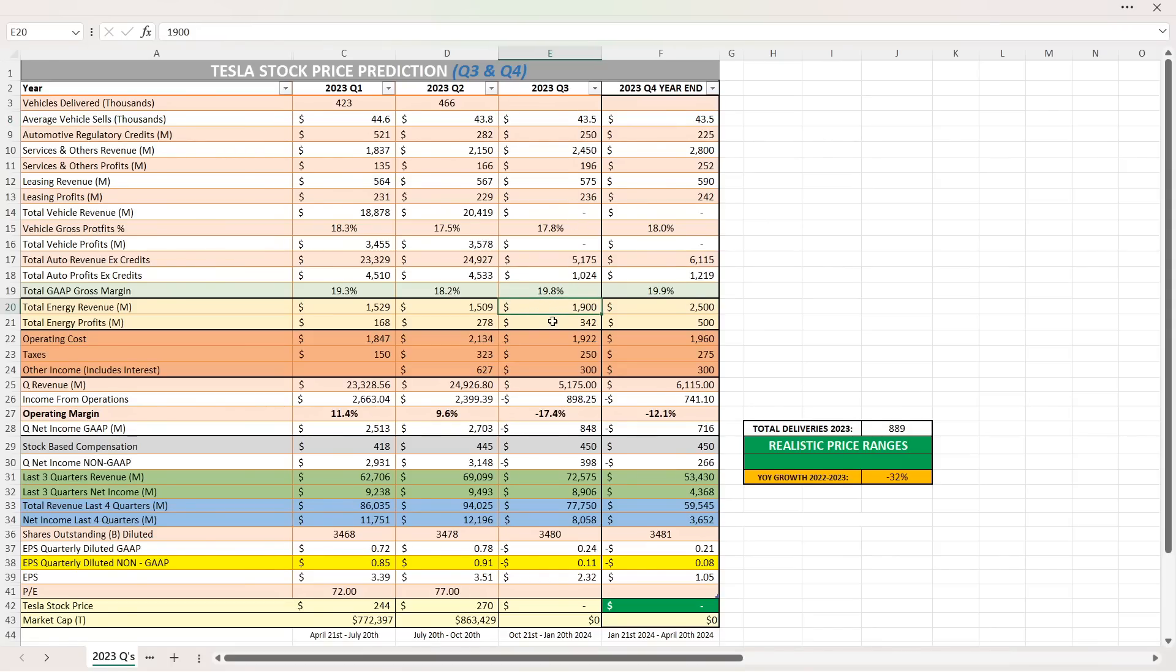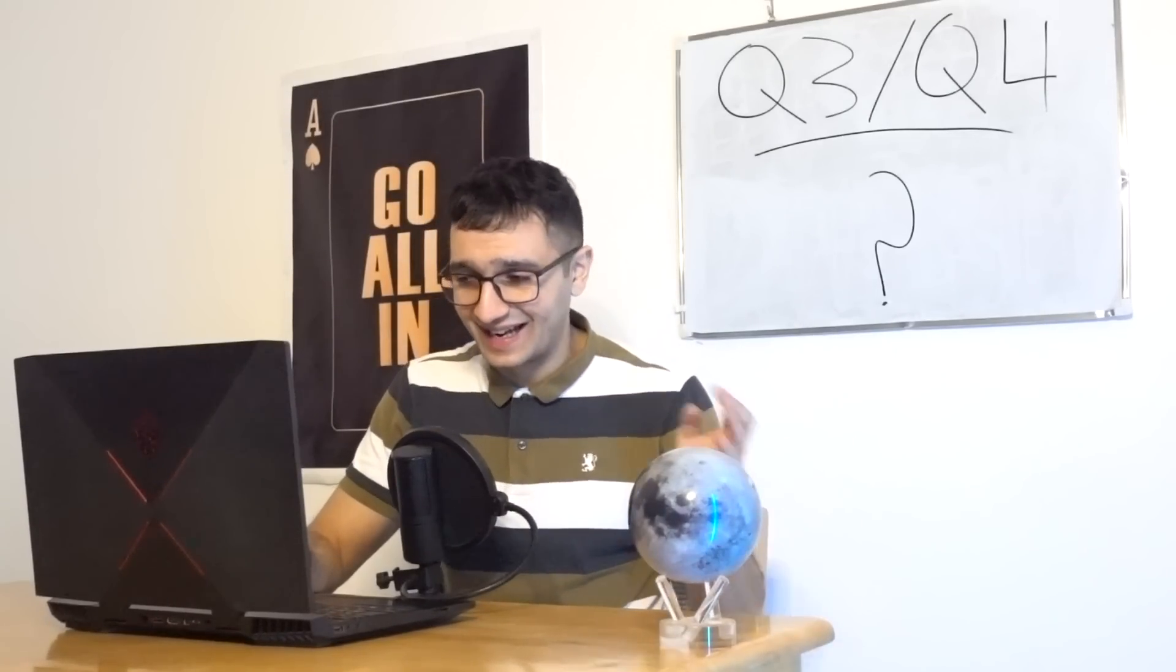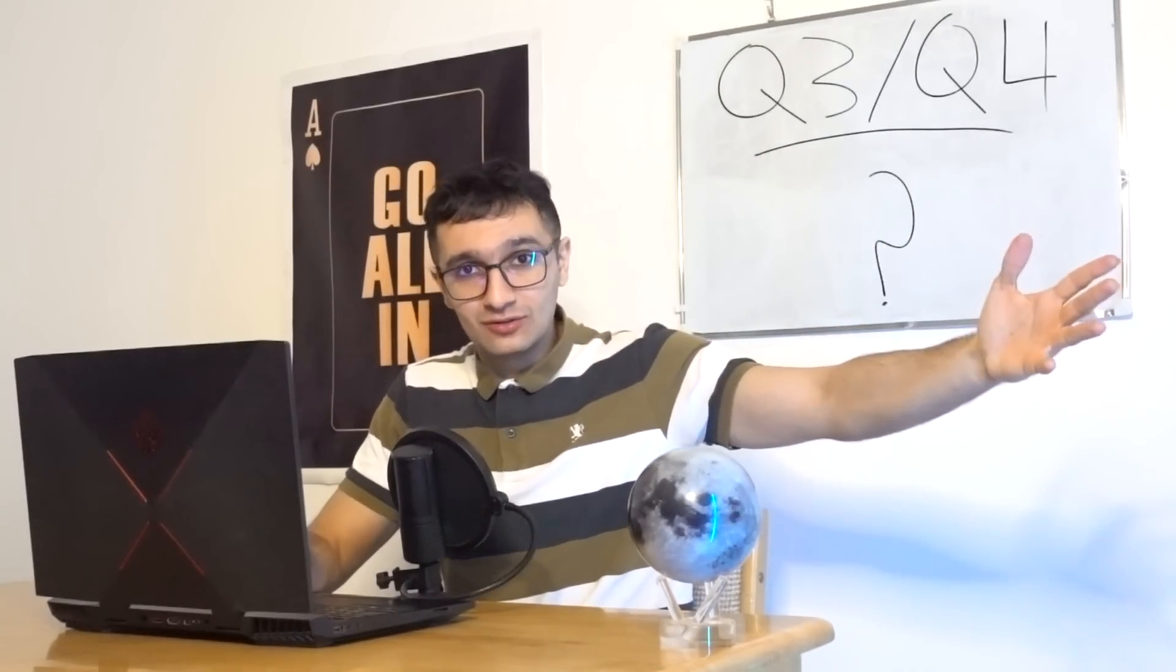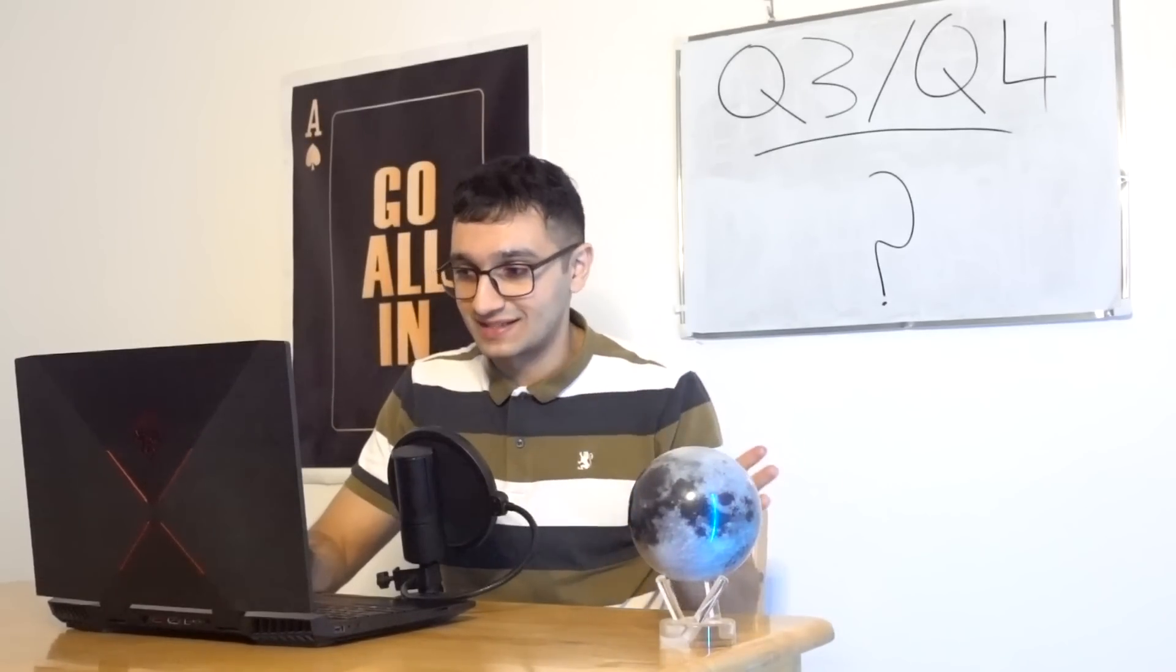Nonetheless, every vehicle price is going down quarter by quarter. Now for the energy section, I put $1.9 billion for the revenue and the profits 18%, as we just saw in Q2, which was absolutely insane. 18% energy, more than the vehicle section. This will continue, obviously, but it's insane to see it's this early. I left it here at 18%, which we get almost $350 million in profits per energy. Operating costs $1.9 billion, taxes $250 million, other income $300 million.